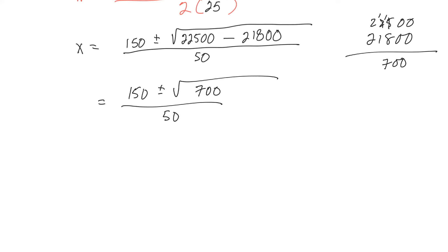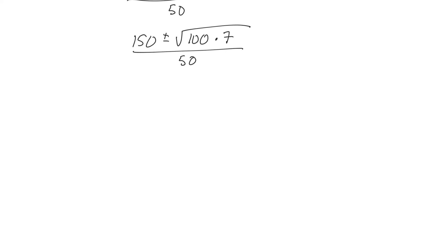Simplifying a little bit more. 700 is the same thing as 100 times 7 over 50. Okay. I'm going down more. And then 150 plus or minus the square root of 100 would be 10, root 7, all over 50. Feeling pretty good there.